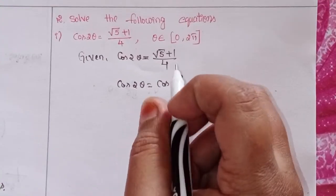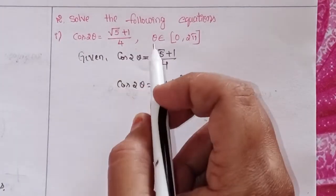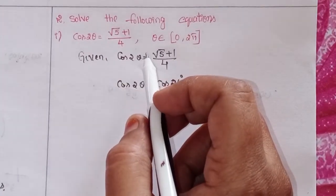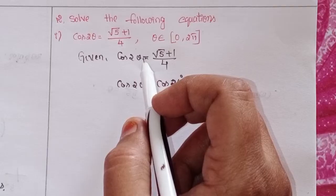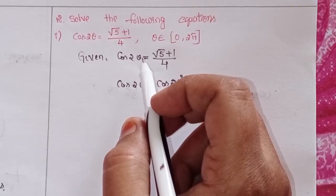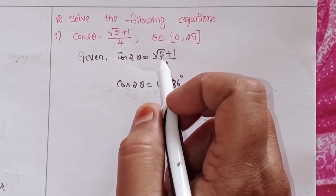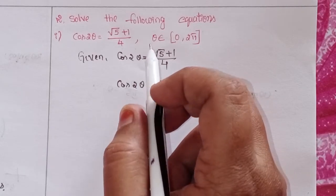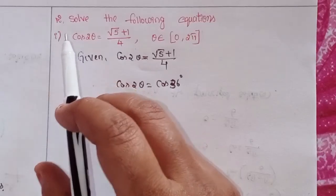Hi viewers, this is Shaheen and welcome to my channel. Today we will discuss intermediate first year 1A chapter number 7, trigonometric equations, exercise 7A, first problem and second problem.